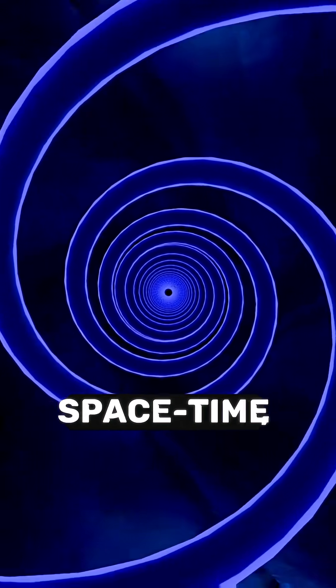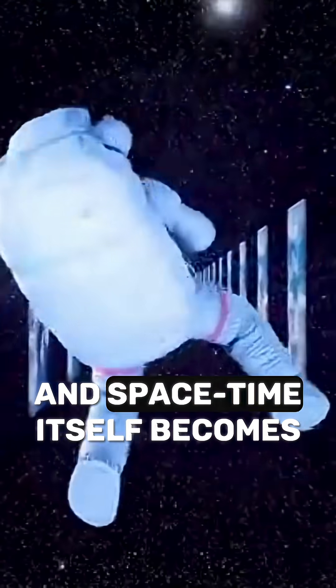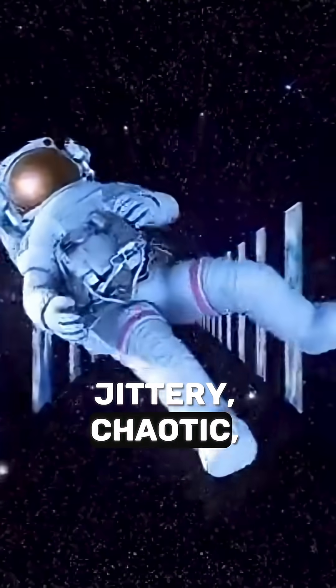Massive objects bend spacetime, and everything follows those curves. But zoom in far enough, and spacetime itself becomes jittery, chaotic, quantum.